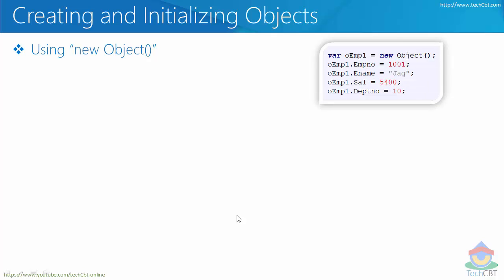The first way is using `new Object()`. Object is a reserved word — it is a built-in function you can call. Using `new Object()` you can create a new instance and allocate memory, which gets assigned to a variable like `oemp1`.